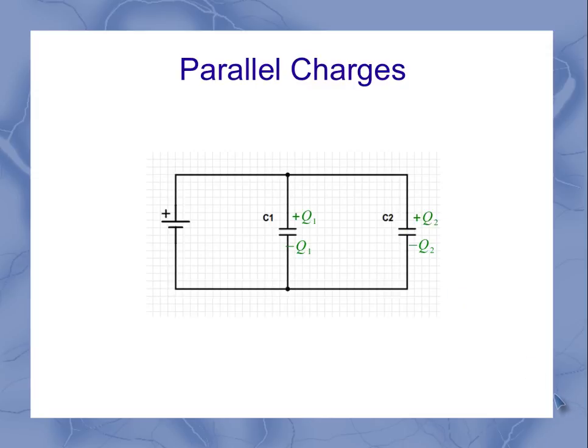They don't have to be the same amount this time. Each one is moved, but notice that they both went through the battery at the same time. That means the equivalent charge moved through the whole circuit is Q1 plus Q2.